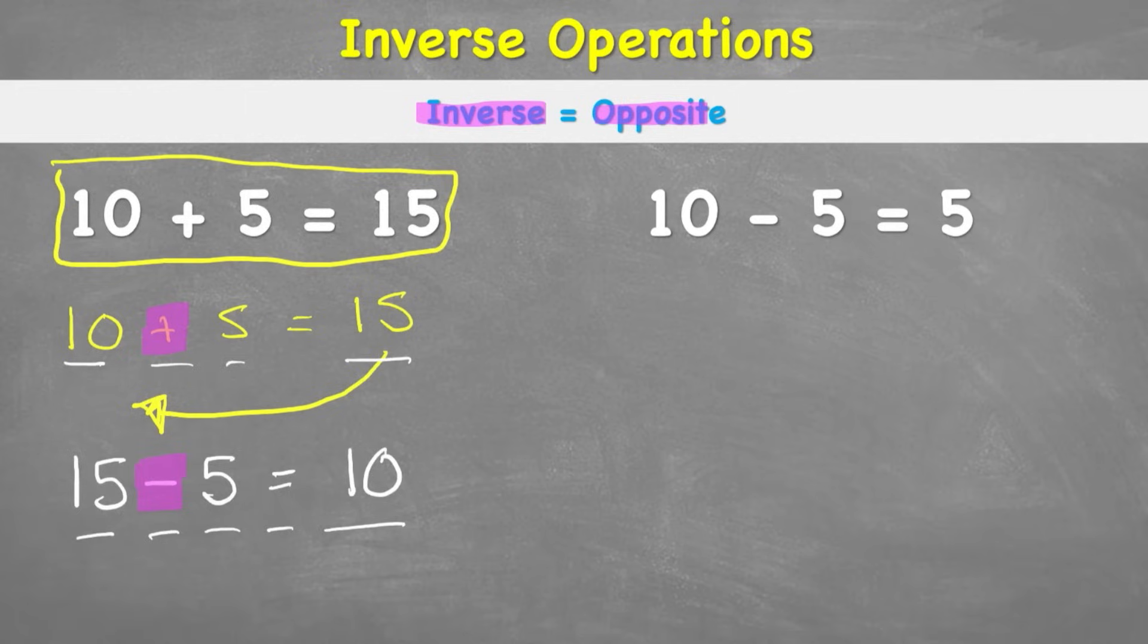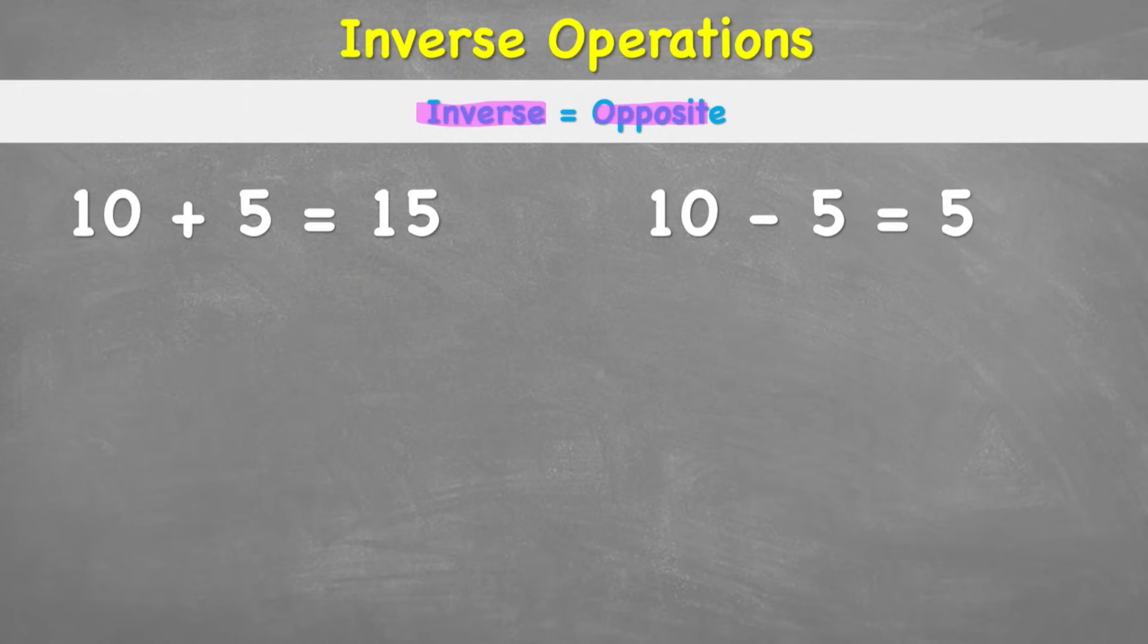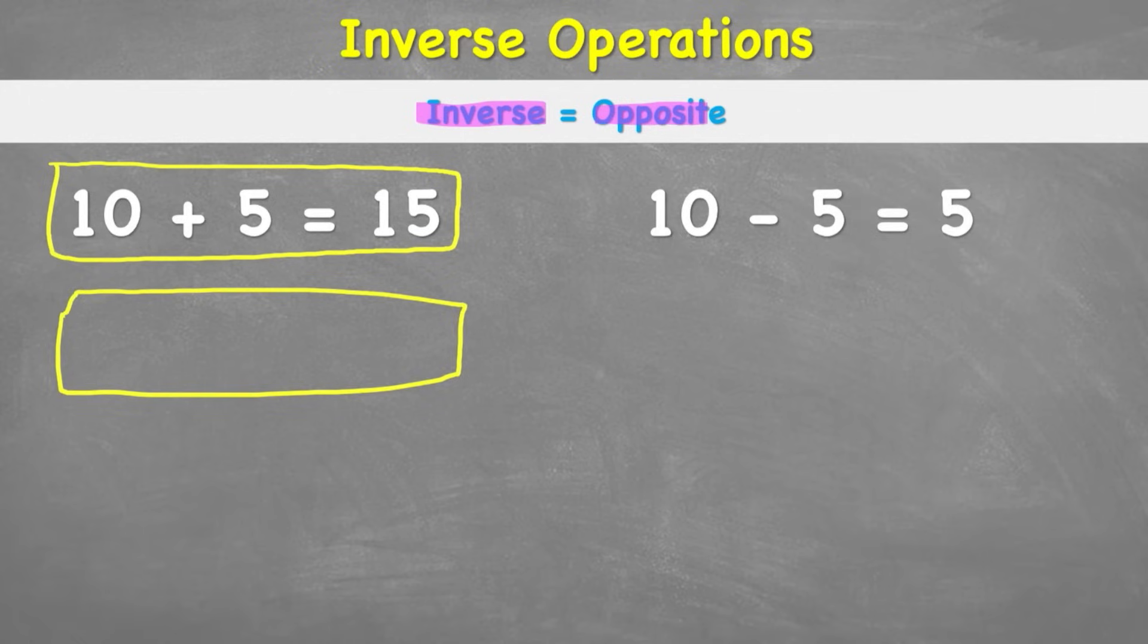So how does this work and why does it work? To understand, we need to understand something really important about number families. Every number sentence, like this one just here, has a number family. Each number family has 4 members.